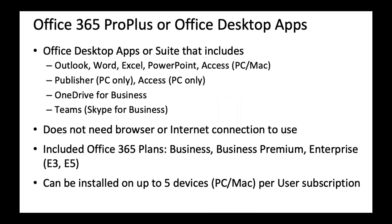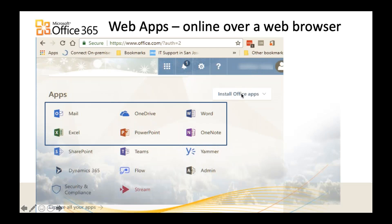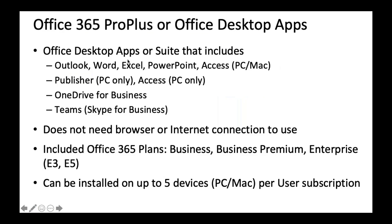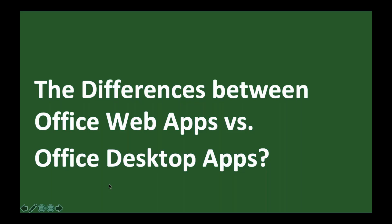The next part is the Office desktop app — that's what you download. If you want to install, you click on that and can download all these products to your local PC or Mac. That's what we call Microsoft Office Pro Plus, or the desktop app. Most plans include it: Office 365 Business, Business Premium, Enterprise E3 and E5 all come with the Office desktop app. Otherwise, you can only use the online version.